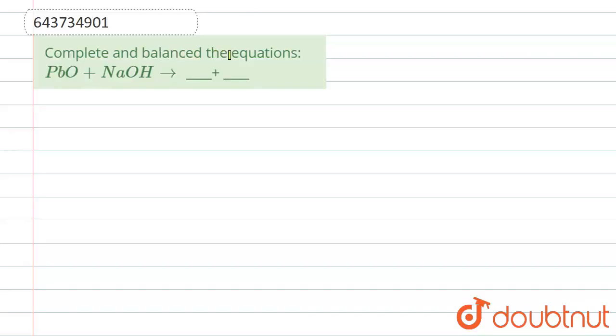and balance the equation. We have PbO plus NaOH. Let us write our reaction. So first of all, we have PbO, lead oxide, plus